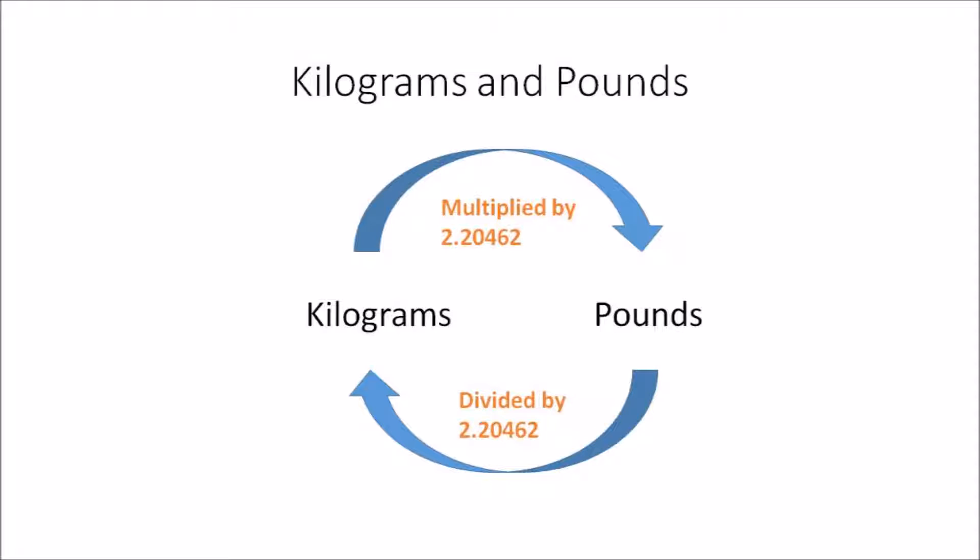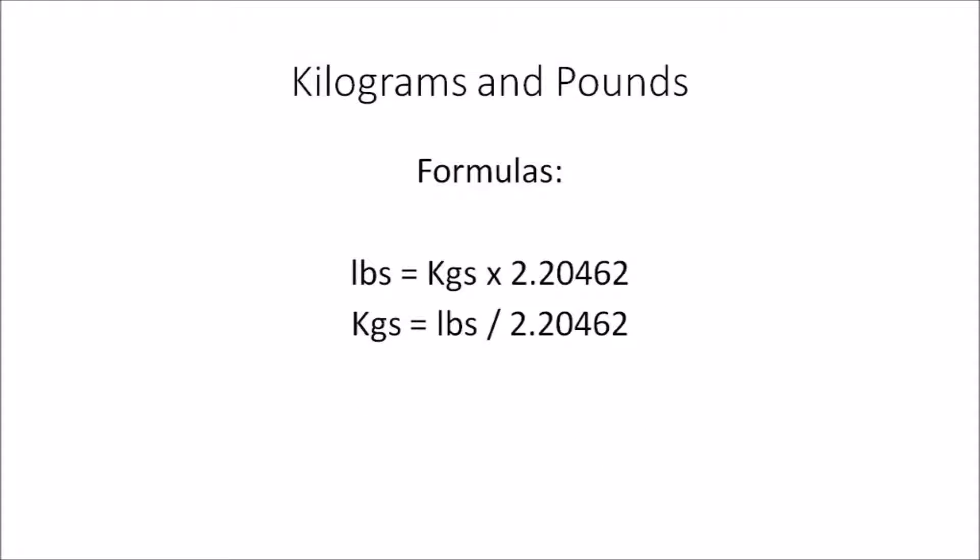To convert kilograms to pounds, you multiply the amount in kilograms by 2.20462. To convert pounds back to kilograms, you divide the amount in pounds by 2.20462. So the formulas are: pounds = kilograms × 2.20462, and kilograms = pounds ÷ 2.20462.